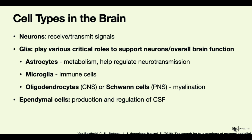The third type of glial cell is the oligodendrocytes in the central nervous system, or their counterparts in the peripheral nervous system, which are called Schwann cells. These are the cells that will be producing the myelin — the fatty substance wrapped around the neuronal axon — and they are responsible for wrapping the axon with myelin sheaths in both the central and peripheral nervous system.